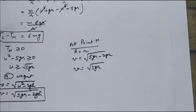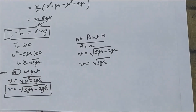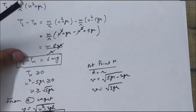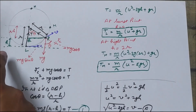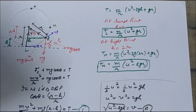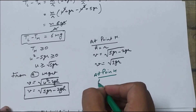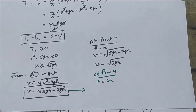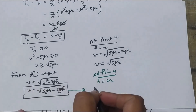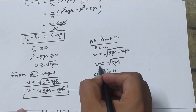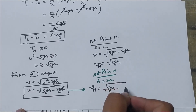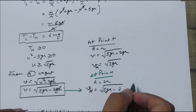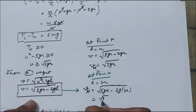If we wish to evaluate the instantaneous velocity at the highest point H, the value of h will be 2r. Substituting into the equation: v_H equals root of (5gr minus 2g times 2r), which equals root of (5gr minus 4gr), giving v_H equals root gr. So the instantaneous velocity of the particle at the highest point is root gr.